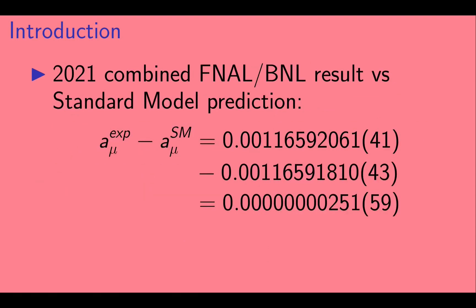Let's take a look at the 2021 combined result versus the standard model prediction. Here, the first term on each side of the equation is the experimental result, along with its error bar in parentheses. The second term is the standard model expectation. Note that it similarly has an error bar. Lastly, we have the difference between the two. This amounts to a 4.2 sigma discrepancy between the measured value and the standard model prediction.